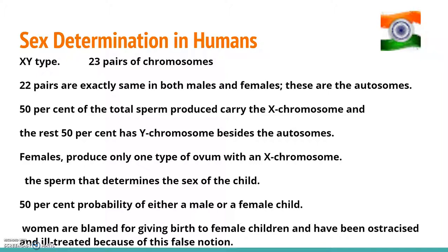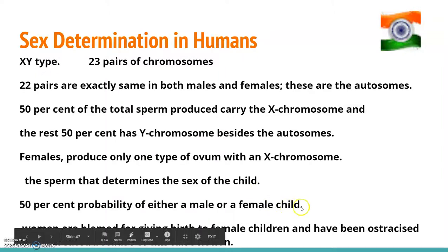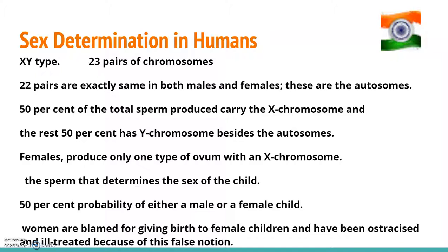There is equal probability of fertilization of the ovum with sperm carrying either X or Y chromosome. When the ovum is fertilized by a sperm carrying the X chromosome, the zygote develops into a female. Fertilization with a Y chromosome-carrying sperm results in a male offspring. So the genetic makeup of the sperm determines the sex of the child — it is the sperm that determines the sex. There is a 50% probability of either a male or female child being produced. Unfortunately, in our society females are often blamed for giving birth to female children, and are ill-treated because of this false notion.